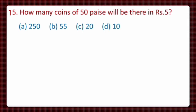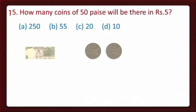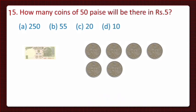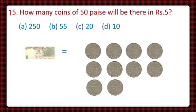First, let's count 50 paise coins in 5 rupees. We know that in 1 rupee, the number of 50 paise coins is 2. In 2 rupees, 50 paise coins will become 4. In 3 rupees, 50 paise coins will become 6. In 4 rupees, 50 paise coins will become 8. And in 5 rupees, 50 paise coins will become 10. So which option is correct? Yes students, 10 is the correct answer and it is given in option D. So let's take option D.